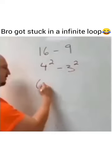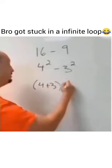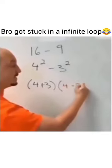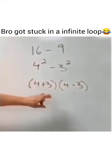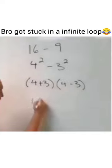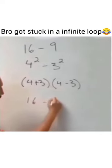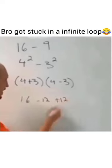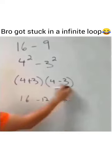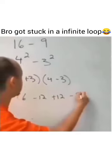We're going to factor that. 4 plus 3 times 4 minus 3. Perfect. Let's multiply that out. 4 and 4 is 16. 4 and negative 3 is negative 12. 3 and 4 is 12. And then we got 9. Perfect.